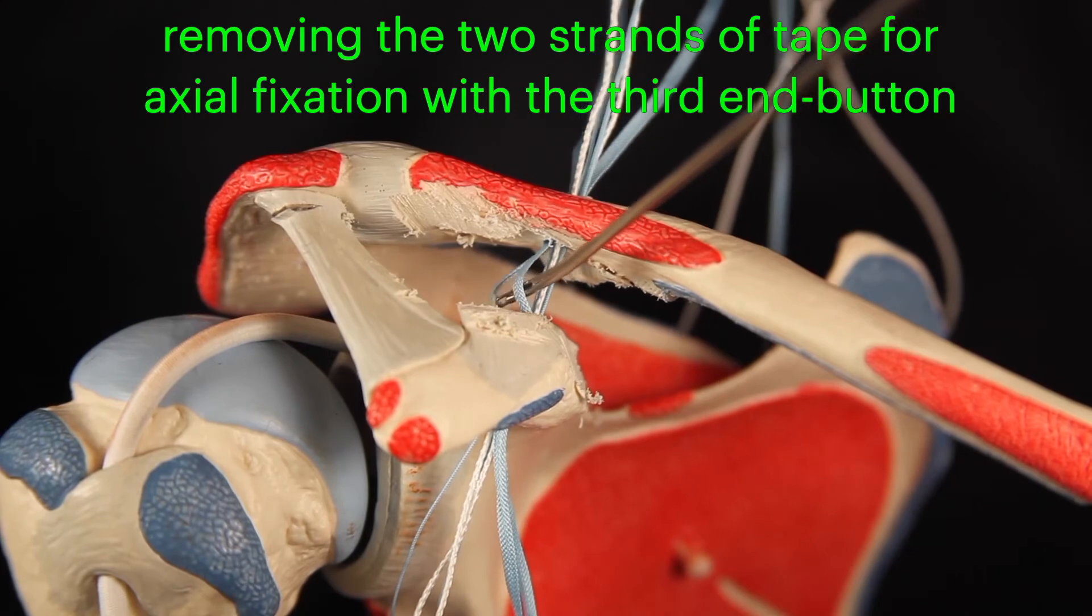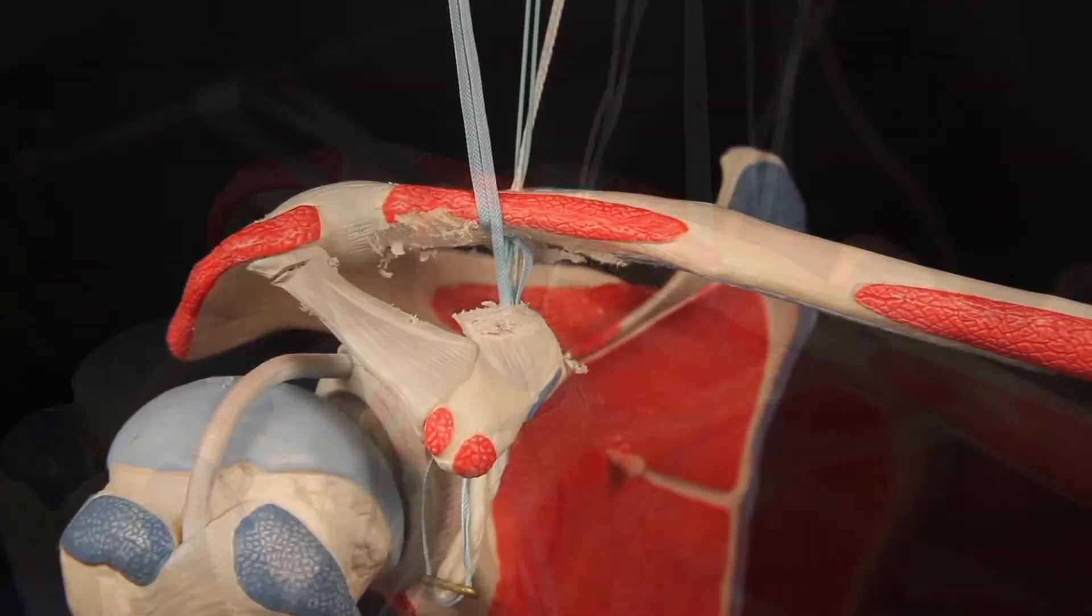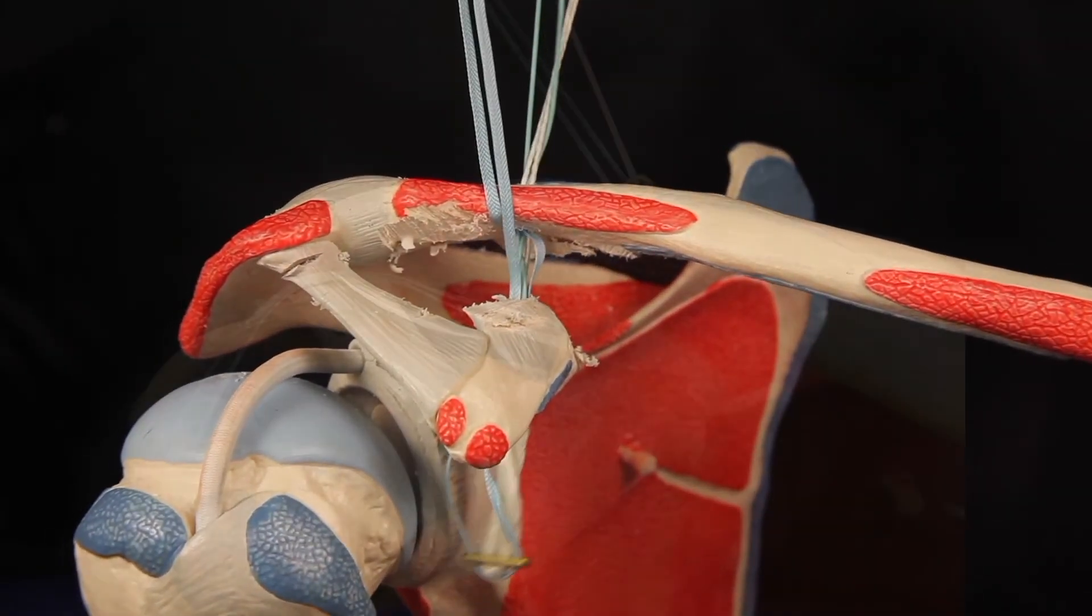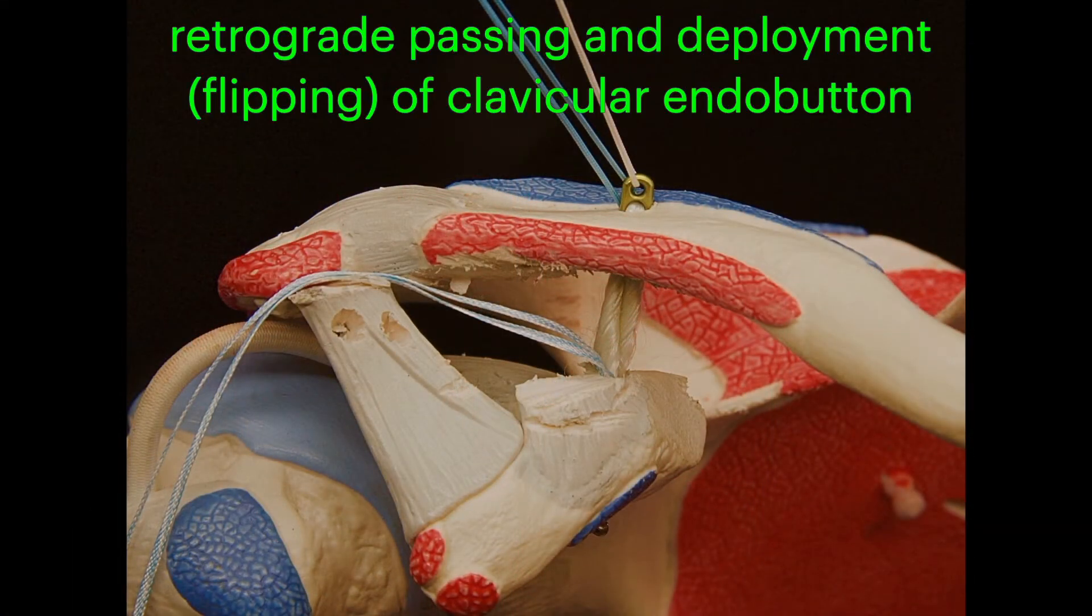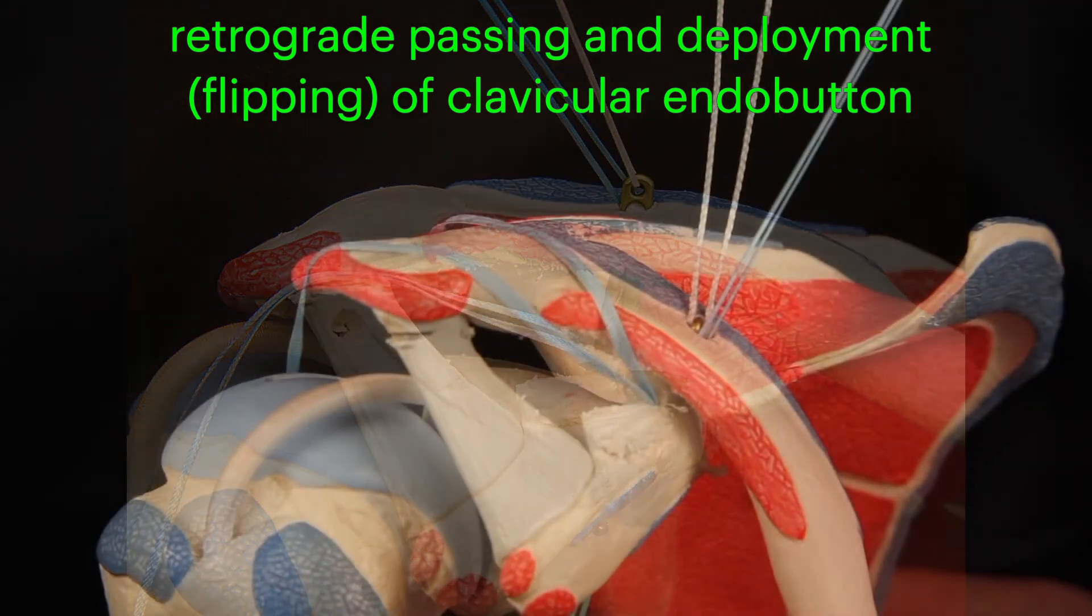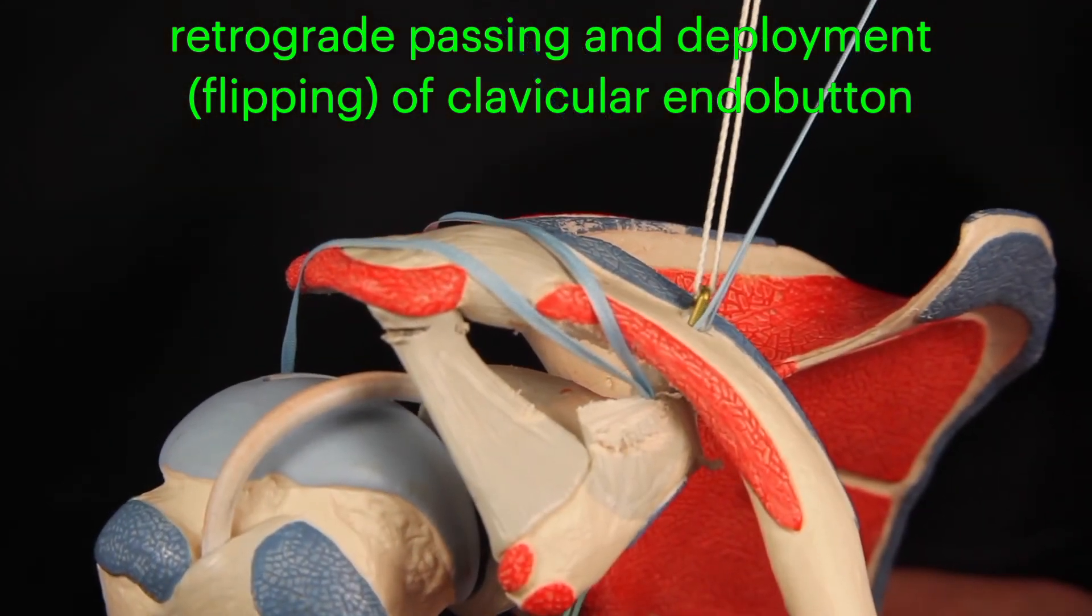The two ultra tape limbs are then pulled out of the coracoid clavicular space with a probe. By pulling on all six limbs, the endobutton is then passed retrograde through the coracoid and clavicle and then flipped onto the surface of the clavicle, completing the fixation.